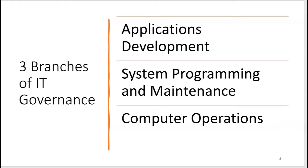The three branches are applications development, system programming and maintenance, and computer operations. Since they're essentially on three different teams, we'll put applications development in a yellow shirt, system programming and maintenance in red, and computer operations in blue. Even though they all work in the same IT department, the segregation of duties between these three branches is very important. If someone's wearing a yellow shirt, they should not be on the red team or the blue team, and vice versa.